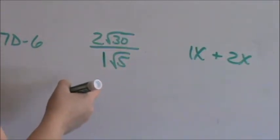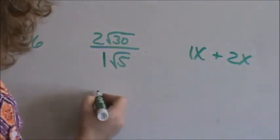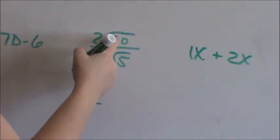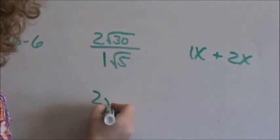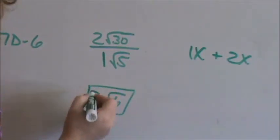So numbers to numbers, radicals to radicals. 2 divided by 1 is 2. Square root of 30 divided by square root of 5. 30 divided by 5 is 6. But we actually keep the radical. So 2 square root of 6.